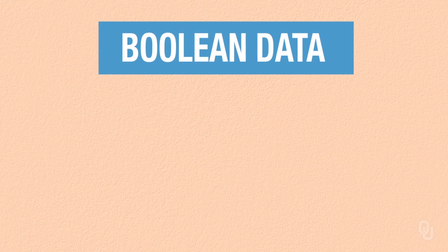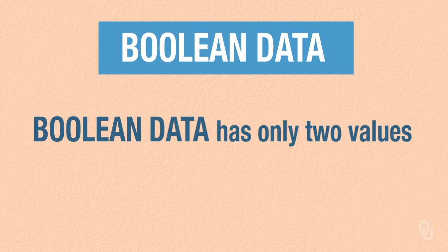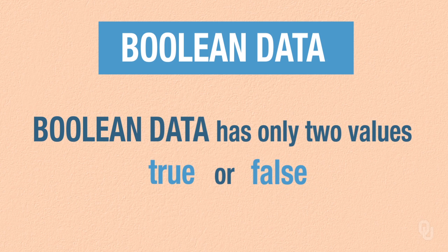In order to do that you need to discover a new type of data. This data is called Boolean data and it's sort of interesting because it has only two values. One is true and the other is false. Notice that there are no quotes around true and false — these aren't strings. It's a different data type.